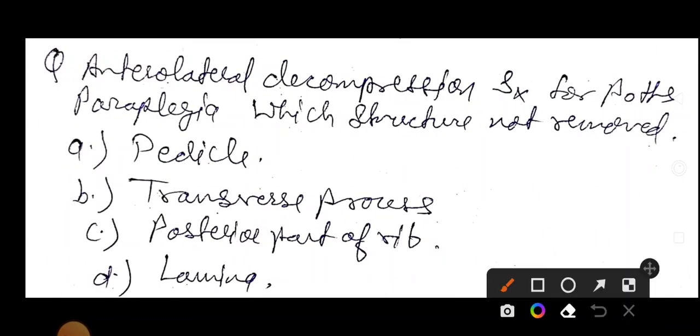Now, anterior lateral decompression surgery for Pott's paraplegia. Which structure not removed? Very important. Pedicle, transverse process, posterior part of rib or lamina. So, which structure is not removed in anterior lateral decompression surgery for Pott's paraplegia? Answer is lamina.